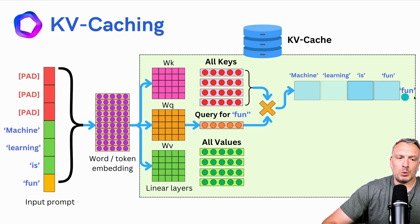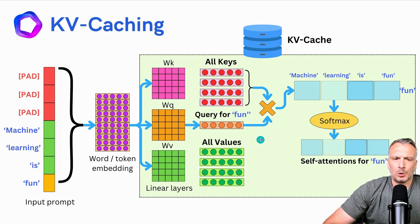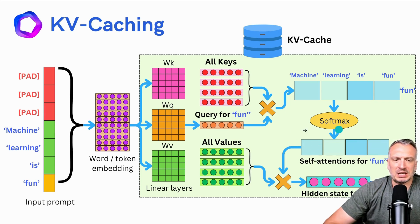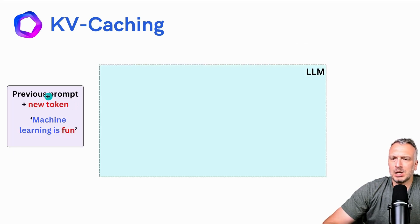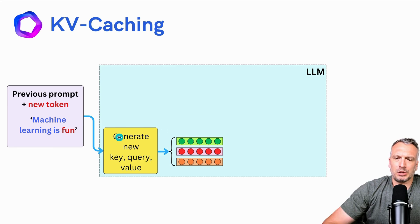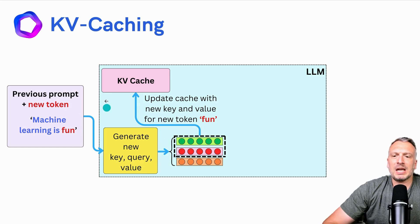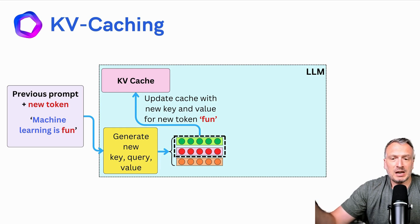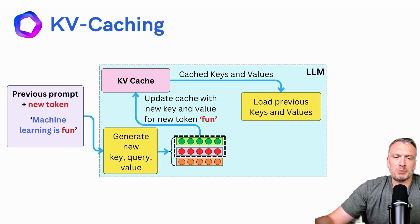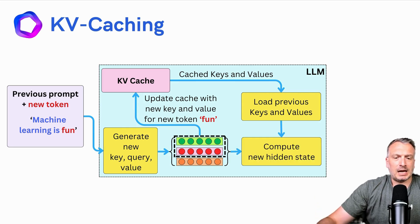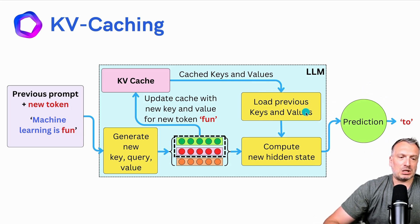We compute the interaction vector between the word 'FUN' and all the other tokens in the input sequence. We pass this interaction vector through the softmax transformation and get the self-attentions for the token 'FUN.' We use these self-attentions to compute the weighted average of the values related to all the tokens in the input sequence to compute the hidden state for the next token. To summarize the KV cache process: we have the prompt with the new token — for example, 'machine learning is' and 'FUN' is the new token. We generate the new key, query, and value vectors, cache them into the KV cache, then load the previous keys and values from the KV cache. Using the new vectors and the cached keys and values, we compute the new hidden states and predictions for the next token.